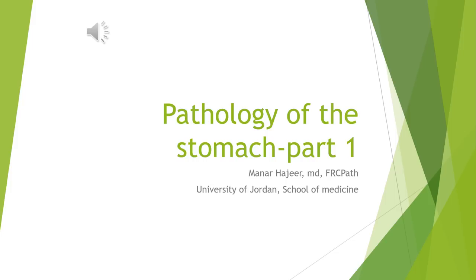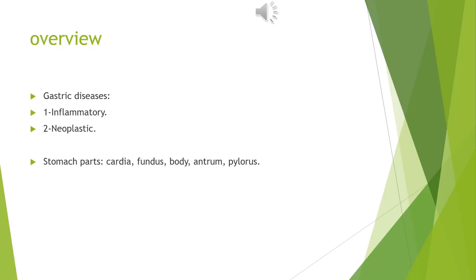In this lecture, the first part of stomach pathology will be discussed. Before discussing diseases, we should review the anatomy and normal histology. The stomach is formed of the cardia, just after the gastroesophageal junction, then the fundus and body, which constitute most of the surface area, then the antrum and the pylorus or pyloric canal, through which the stomach communicates with the duodenum.